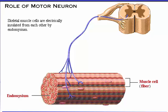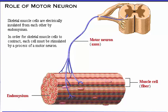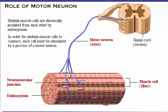Skeletal muscle cells are electrically insulated from each other by endomysium. In order for skeletal muscle cells to contract, each cell must be stimulated by a process of a motor neuron. Each motor neuron is a single nerve cell extending from the brain or spinal cord to the muscle, where it can stimulate several muscle cells. The axon is the elongated process of the nerve cell that carries impulses to the muscle. The neuromuscular junction is the place where the terminal portion of a motor neuron axon meets the muscle cell membrane.